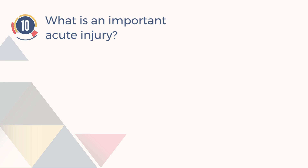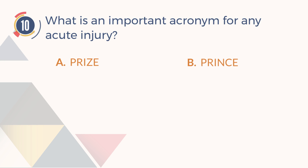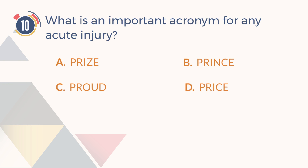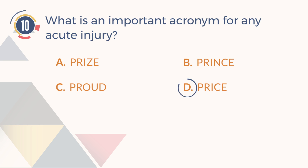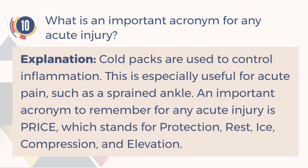Number 10. What is an important acronym for any acute injury? A. P-R-I-Z-E. B. P-R-I-N-C-E. C. P-R-O-U-D-E. D. P-R-I-C-E. The answer is D, P-R-I-C-E. Cold packs are used to control inflammation, especially useful for acute pain such as a sprained ankle. An important acronym to remember for any acute injury is P-R-I-C-E, which stands for Protection, Rest, Ice, Compression, and Elevation.